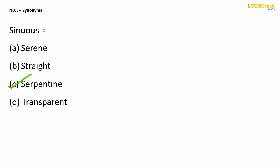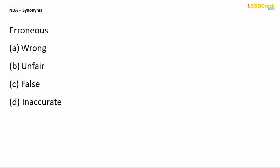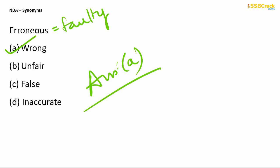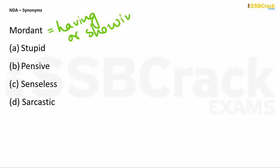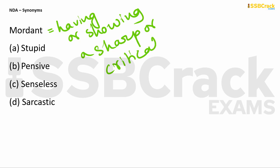Sinuous means serpentine, like a serpent, so your answer is option C — 'serpentine' is the synonym of sinuous. The next word is erroneous. You know the word error — erroneous means something which is wrong or faulty. 'Wrong' is the synonym of erroneous, and your answer is therefore option A.